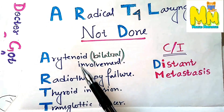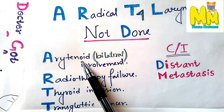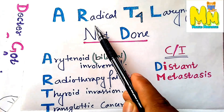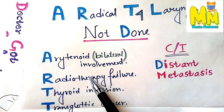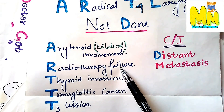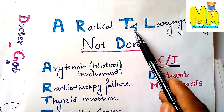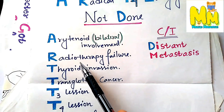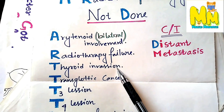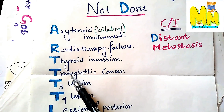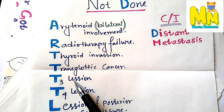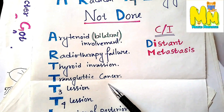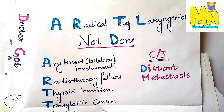For A, it is bilateral arytenoid involvement. For R, it is radiotherapy failure. For T4, the first is thyroid invasion, second is transglottic cancer, and all T3 and T4 lesions in TNM classification of carcinoma larynx.